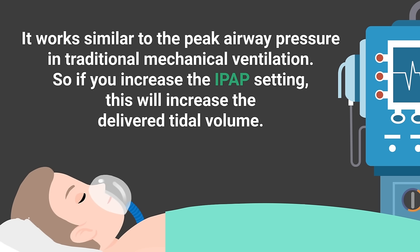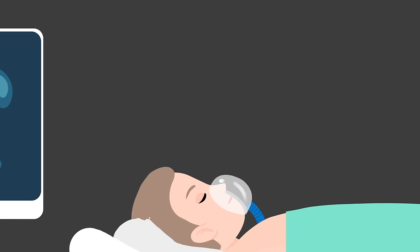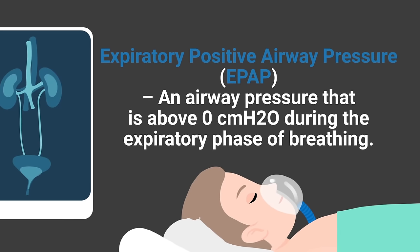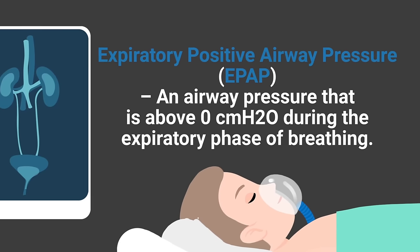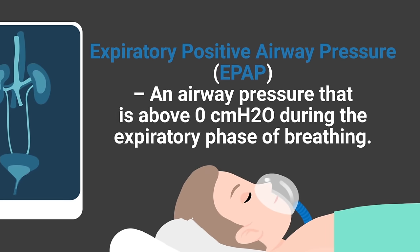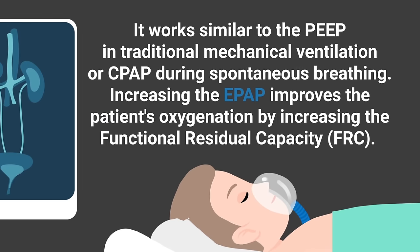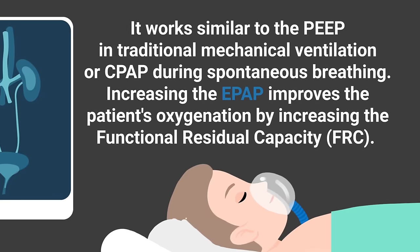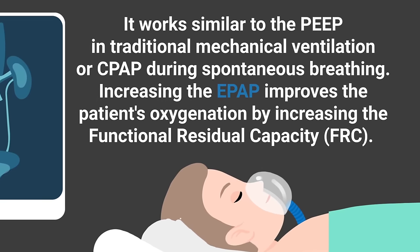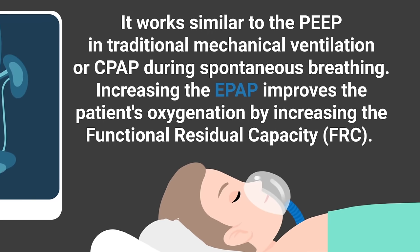IPAP works similar to the peak airway pressure in traditional mechanical ventilation. If you increase the IPAP setting, this will increase the delivered tidal volume. Then you have EPAP, which stands for expiratory positive airway pressure — this is an airway pressure that is above zero during the expiratory phase of breathing. It works similar to PEEP in traditional mechanical ventilation, or CPAP during spontaneous breathing.